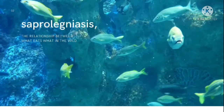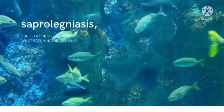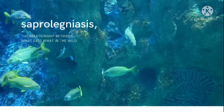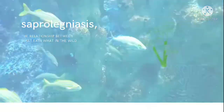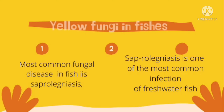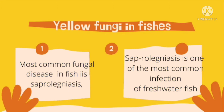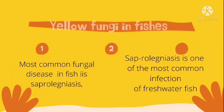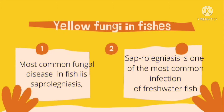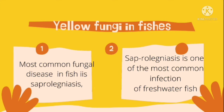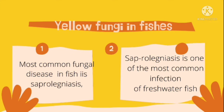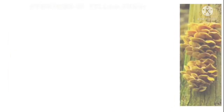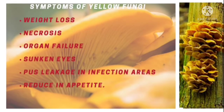The diseases in fish are divided into two types, which are mostly fungal diseases. Sporangiolisis is one of the most common infections in freshwater fish and fish kept in water tanks or fresh tanks.